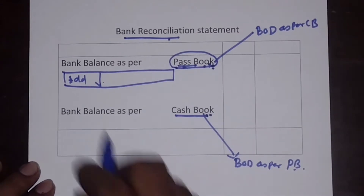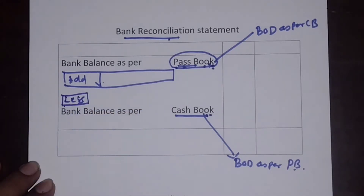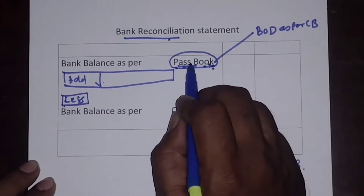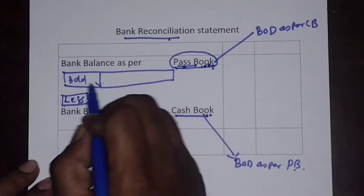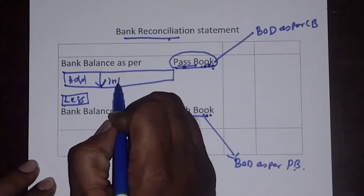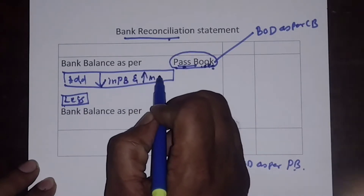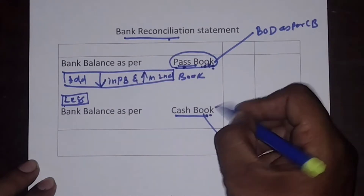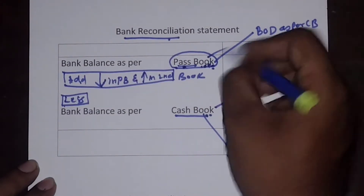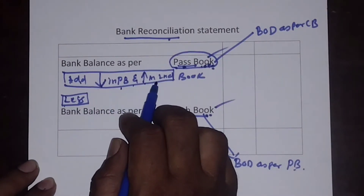What procedures are to be followed? Some entries are to be added, some entries are to be deducted. What is to be added? First, always see what is the first book. The first book is pass book. So what you have to do: add decrease in first book and increase in second book. My second book here is cash book and my first book is pass book. Therefore, decrease in first book and increase in second book are added.